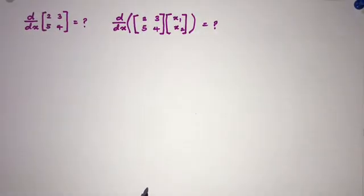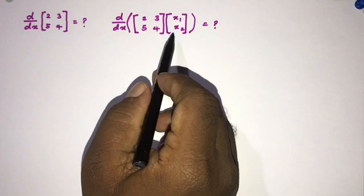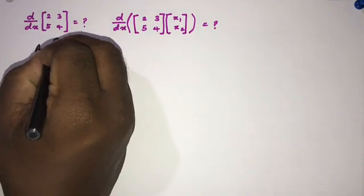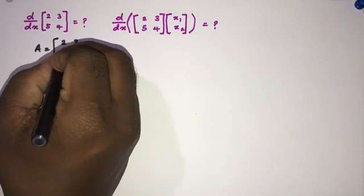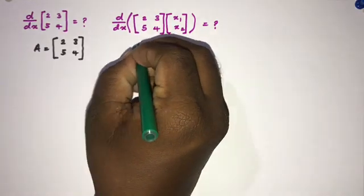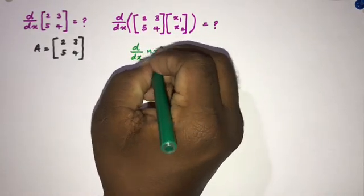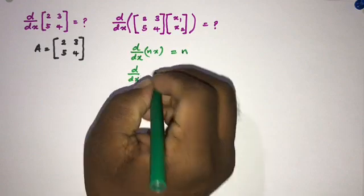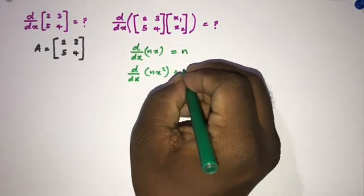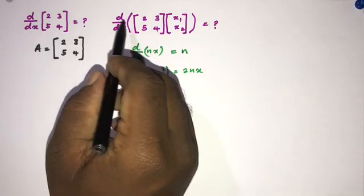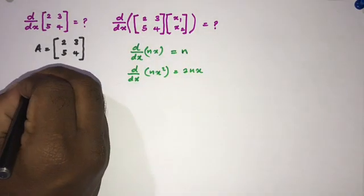Welcome to the mathematics channel. Today we are going to talk about the derivative of a matrix and the derivative of a linear transformation. I am going to take matrix A equal to [[2, 3], [5, 4]]. We know the general differentiation: d/dx of nx equals n, and d/dx of nx squared equals 2nx.